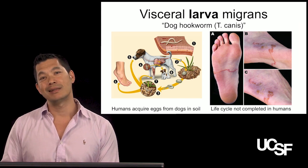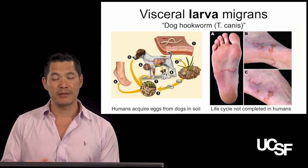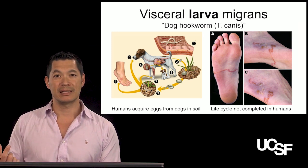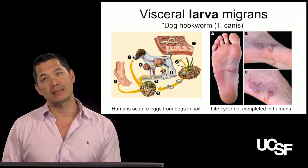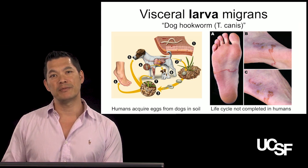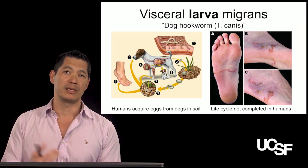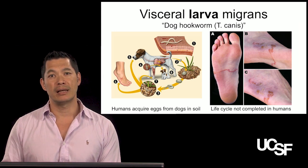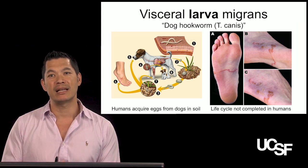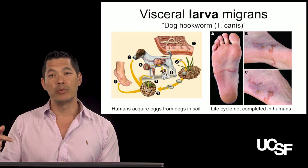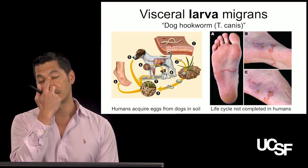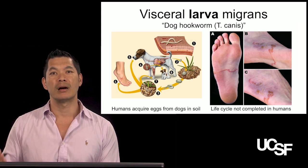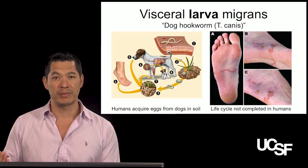This is dog hookworm causing cutaneous larva migrans — not human hookworm, not Necator or any of the other species. This is the hookworm that dogs get, so vets are often exposed to this infection. I had a patient who went to Jamaica and was volunteering in a dog pound. When she came back, she had what looked like a worm moving around in her feet — but it was dog hookworm causing visceral larva migrans, not human hookworm.